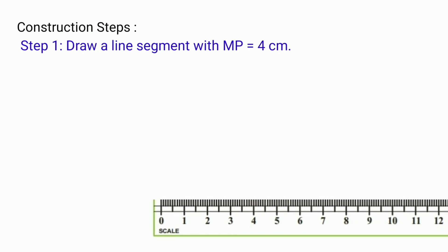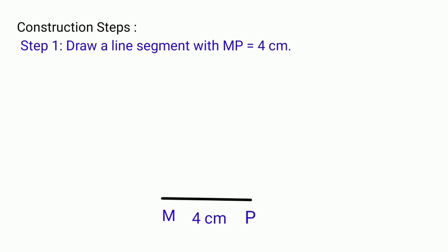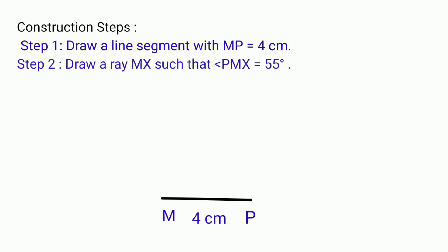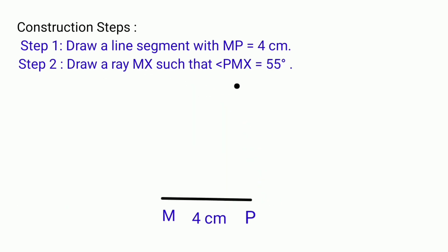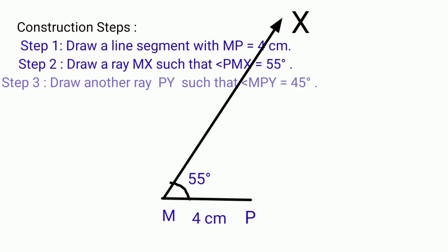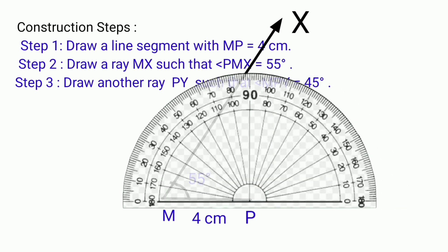Construction steps. Step 1: Draw a line segment MP equal to 4 cm. Step 2: Draw a ray MX such that angle PMX equals to 55 degrees. Step 3: Draw another ray PY such that angle MPY equals to 45 degrees.